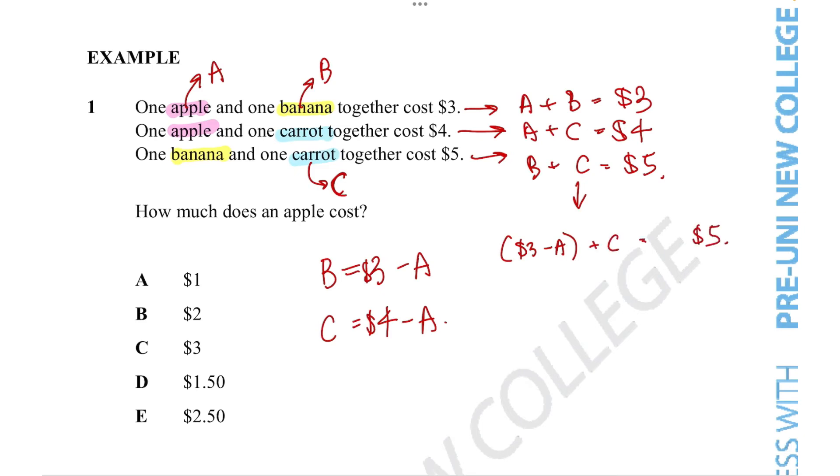Remember our goal is to reduce the number of letters as much as possible. Right now we still have two letters, which doesn't help us, which is why this equation also comes in handy. Instead of writing the letter C, we're going to replace it with $4 - A. So $3 - A + $4 - A = $5. Now all that's left is to simplify this equation.